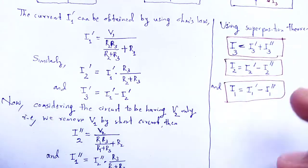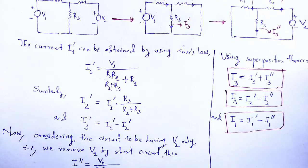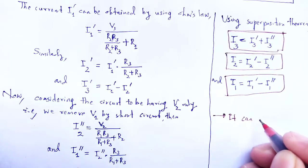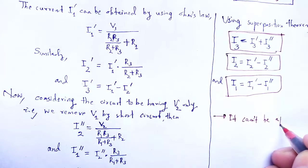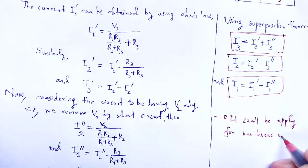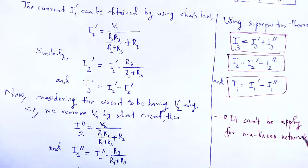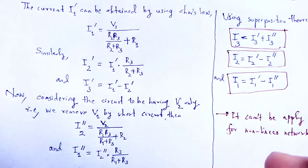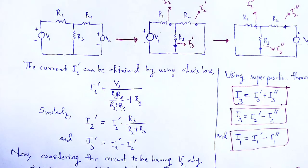Remember an important point: superposition theorem cannot be applied to a non-linear network. It is only valid for linear networks. And for alternating current networks, when applying superposition theorem, the currents must be taken as the phasor sum.